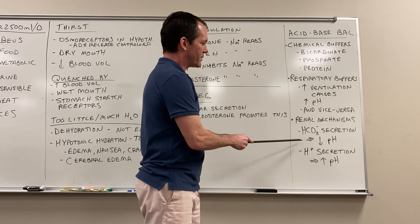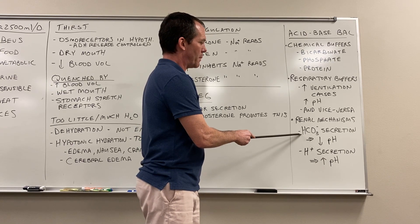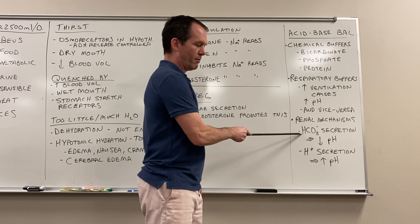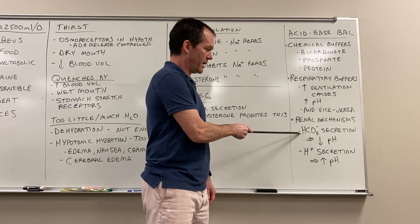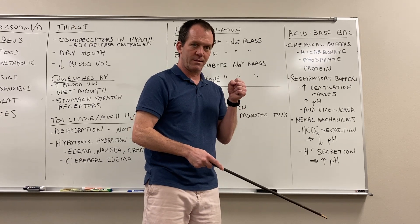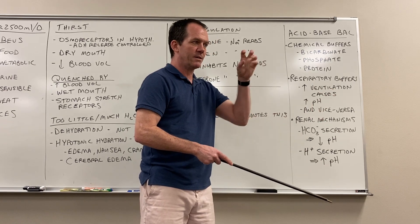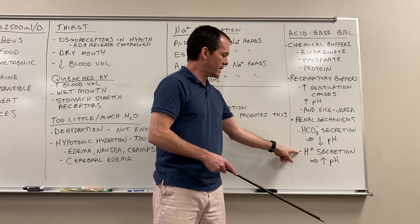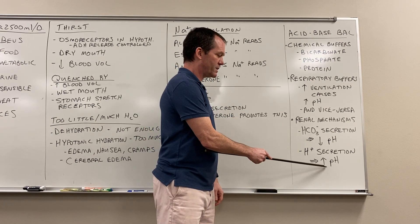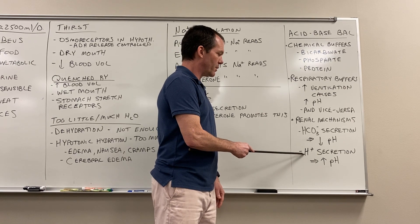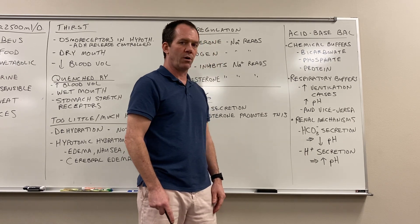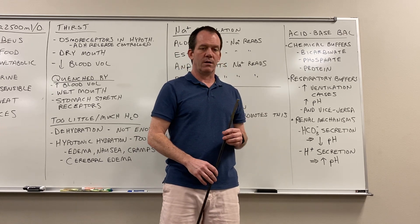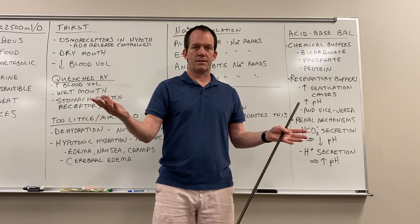Third, renal mechanisms, which again deal with bicarbonate. If you want to make your blood more acidic, get rid of some bicarbonate — because bicarbonate tends to bind hydrogen ions, so with less bicarbonate available, the pH goes down. Conversely, if you want to raise blood pH, your kidneys secrete more hydrogen ions — the flip side of secreting bicarbonate.